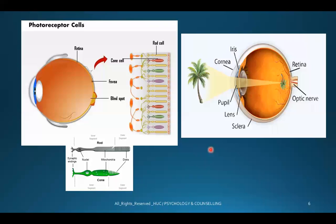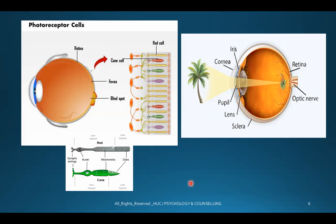The optic nerve transmits all visual information to the brain. So the vision process: you see an image, it falls on the retina and is captured by the rod and cone photoreceptor cells, and then through the optic nerve it is sent to the brain. That is how the vision sensation takes place.